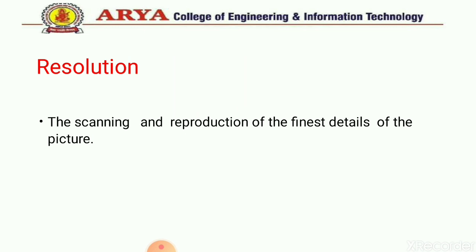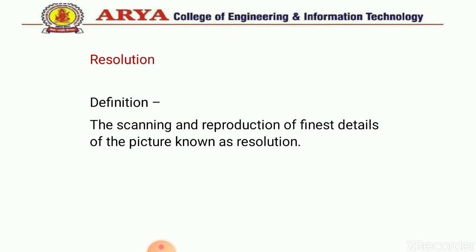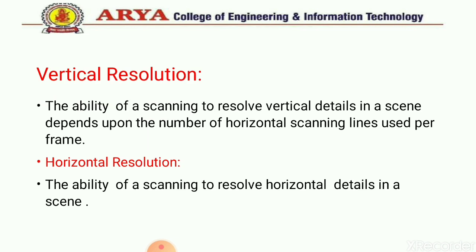Now, resolution. Resolution is the number of pixels per unit length in the horizontal as well as vertical direction of an image. There are two types of resolution: vertical resolution and horizontal resolution. Vertical resolution refers to the ability of scanning to resolve vertical details in a scene, which depends upon the number of horizontal scanning lines used per frame.